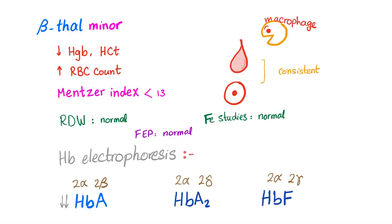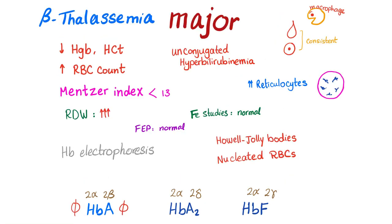RDW normal. Iron studies normal. Free erythrocyte protoporphyrin normal. Hemoglobin electrophoresis: hemoglobin A will be decreased, however hemoglobin A2 increased and hemoglobin F increased. Now the big one - beta thalassemia major.